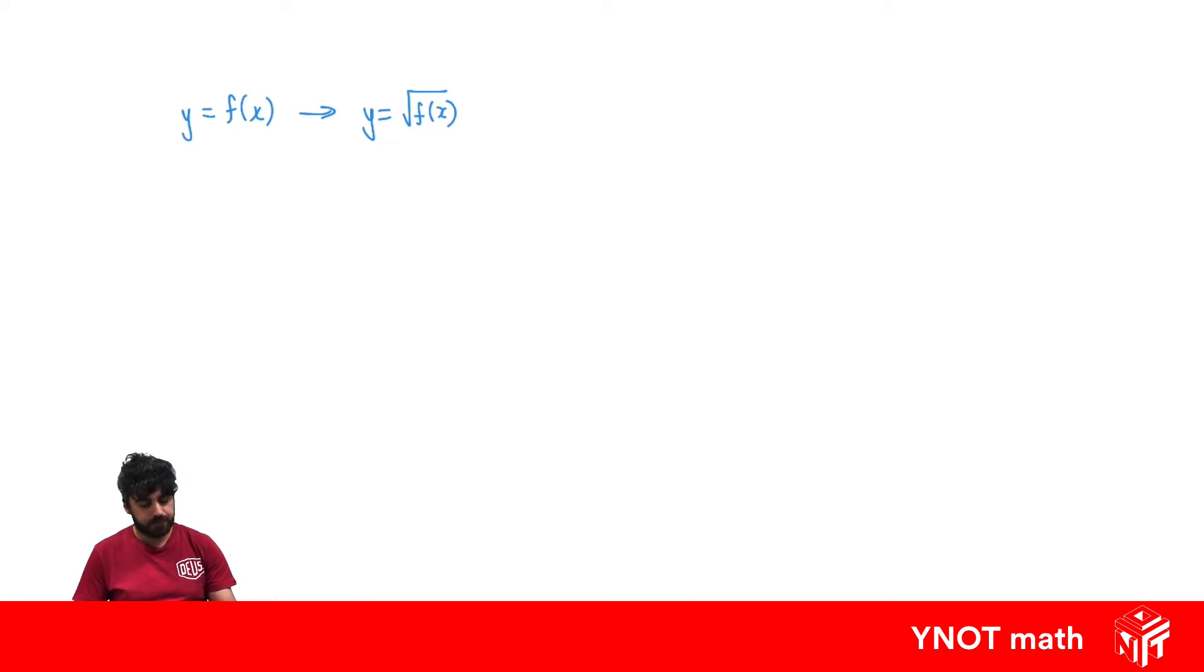Some important things to note: the square root of 0 equals 0, the square root of 1 also equals 1. The square root of a number less than 1, let's say 0.9, is roughly 0.94, so it ends up being bigger than the original number.